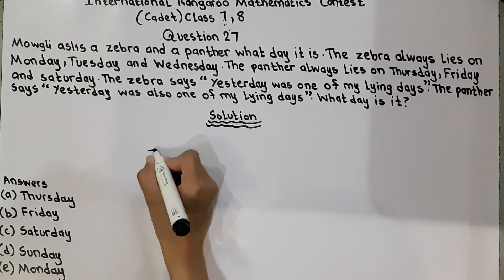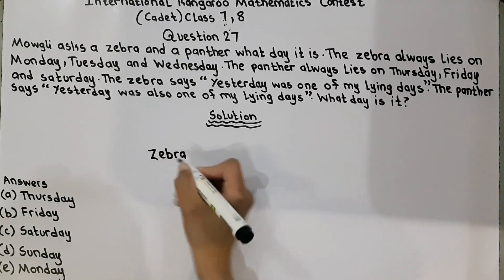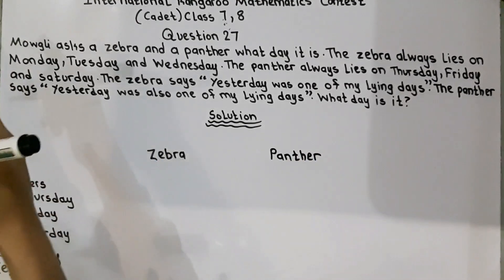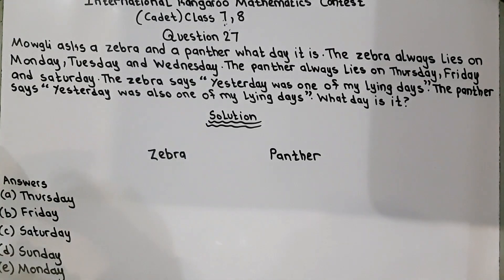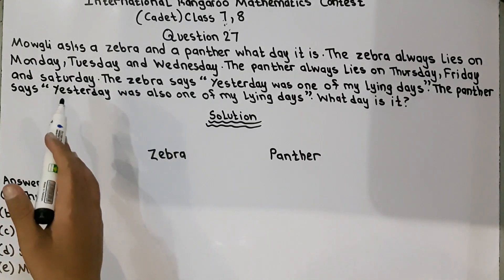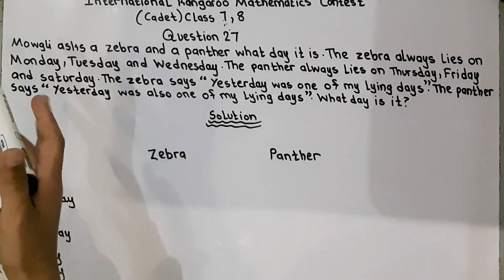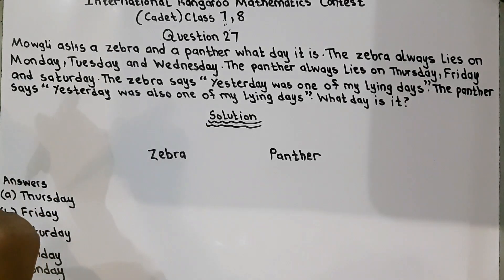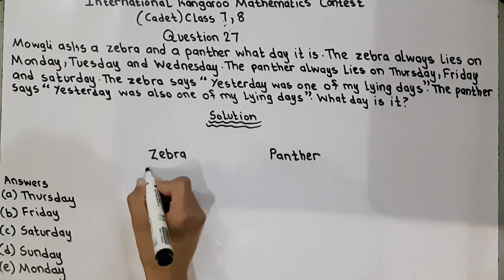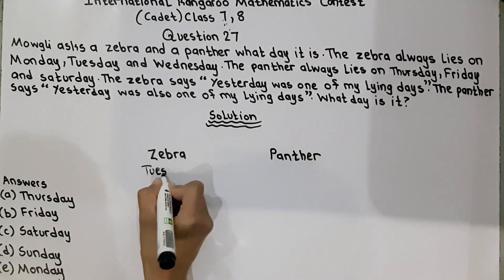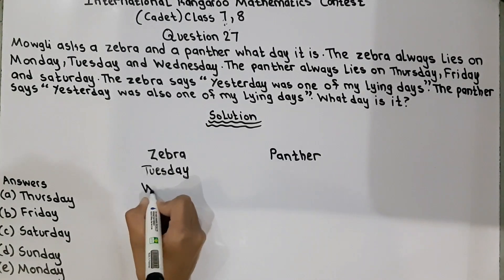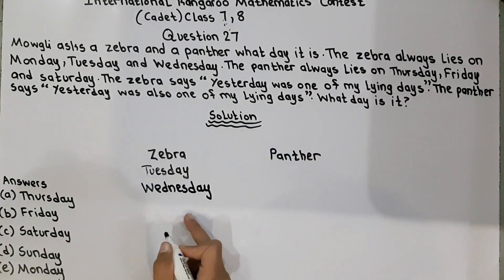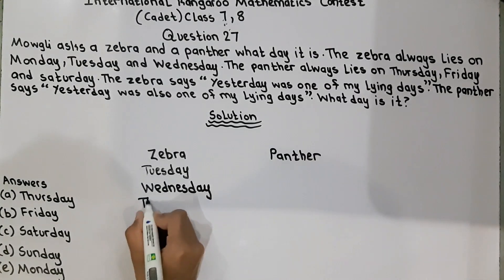First we will write the animals and their lying days — zebra and panther. The zebra's lying days are Monday, Tuesday and Wednesday. We will not write Monday because if Monday is the day, yesterday was Sunday, which is not a lying day. So we will write Tuesday, Wednesday, and Thursday — because on Thursday the zebra can say Wednesday was one of my lying days.